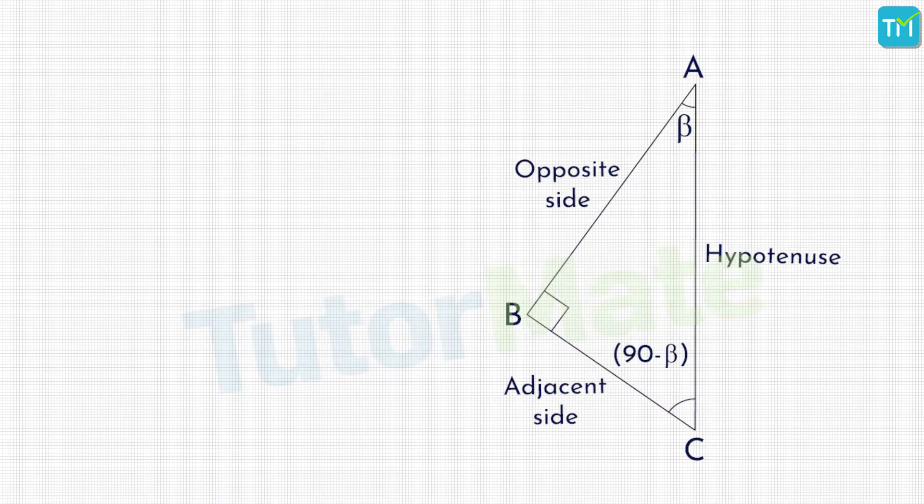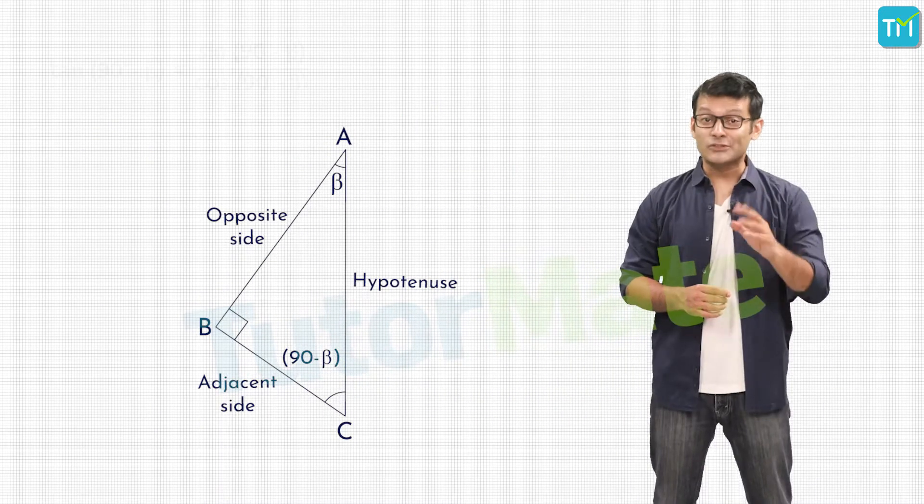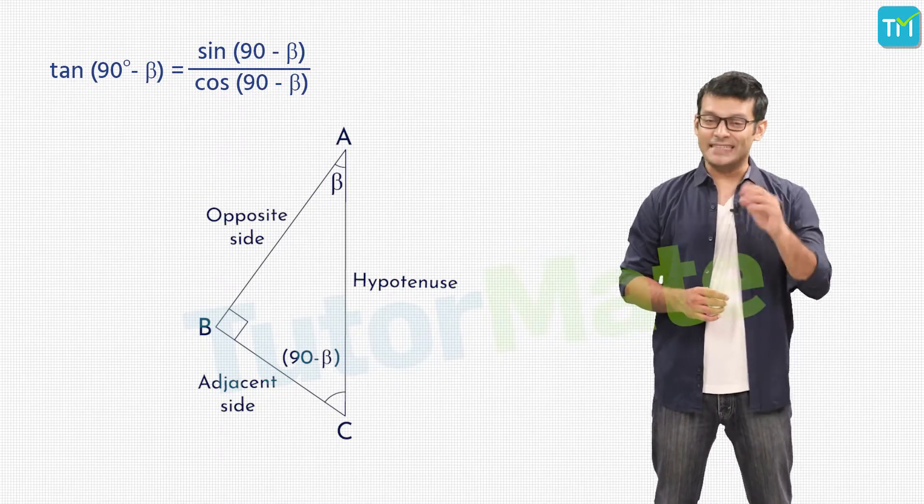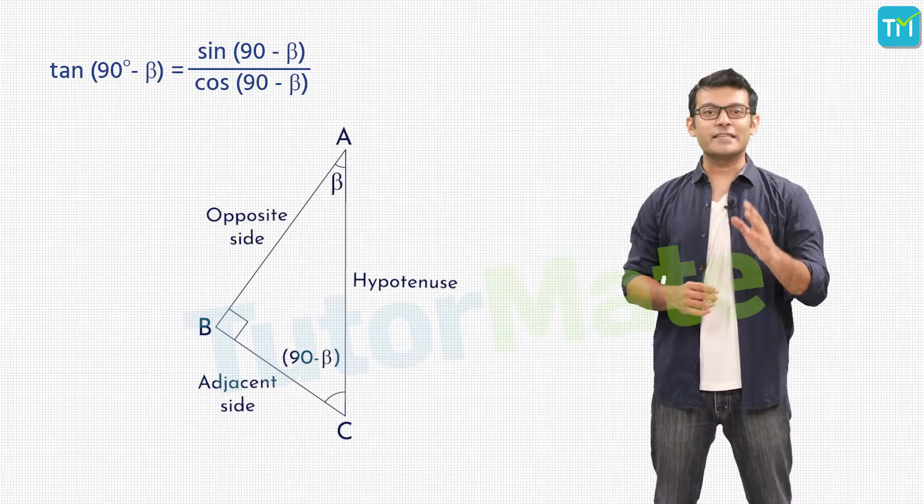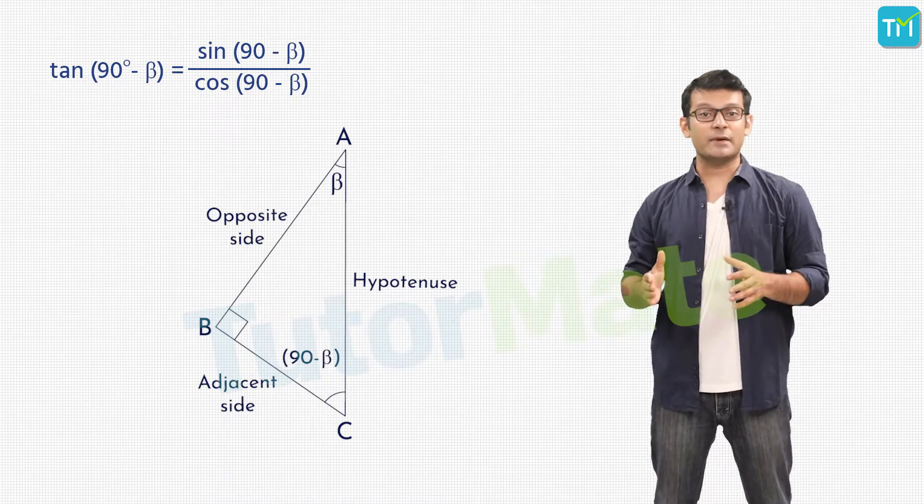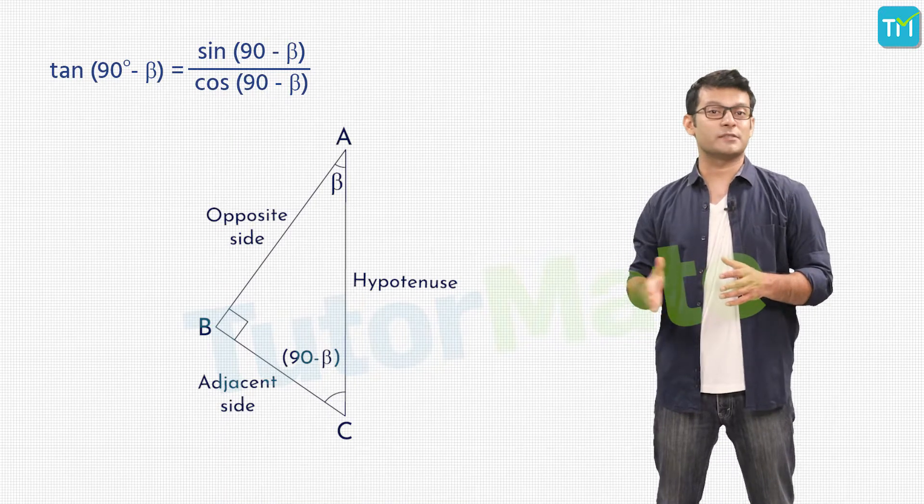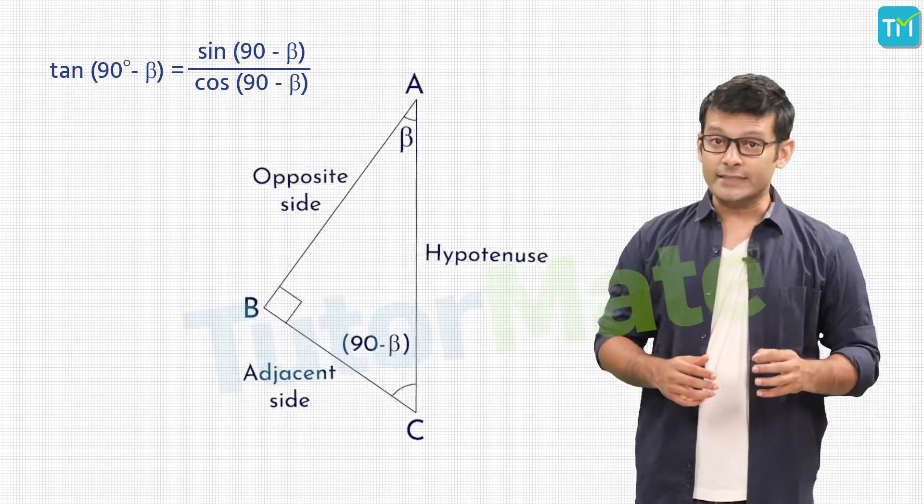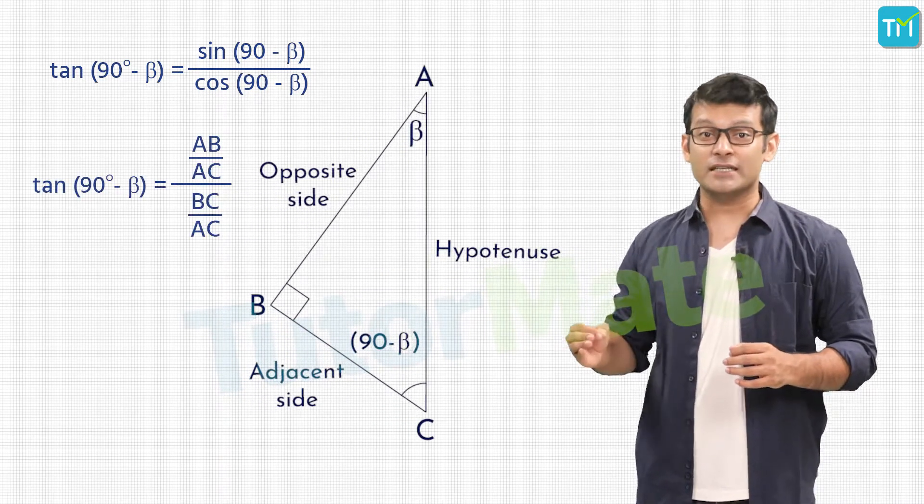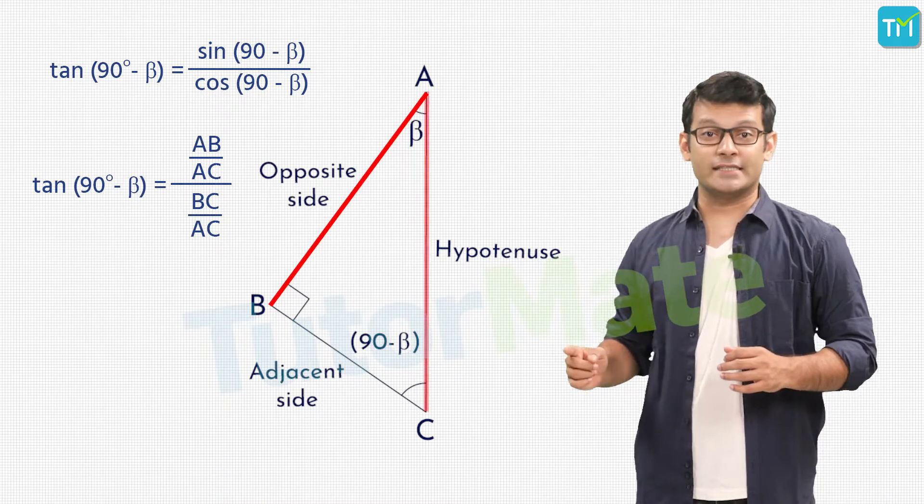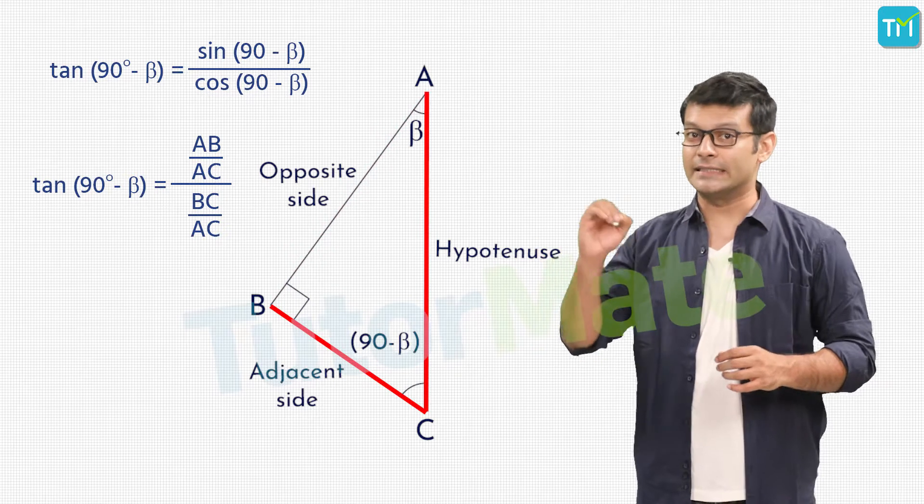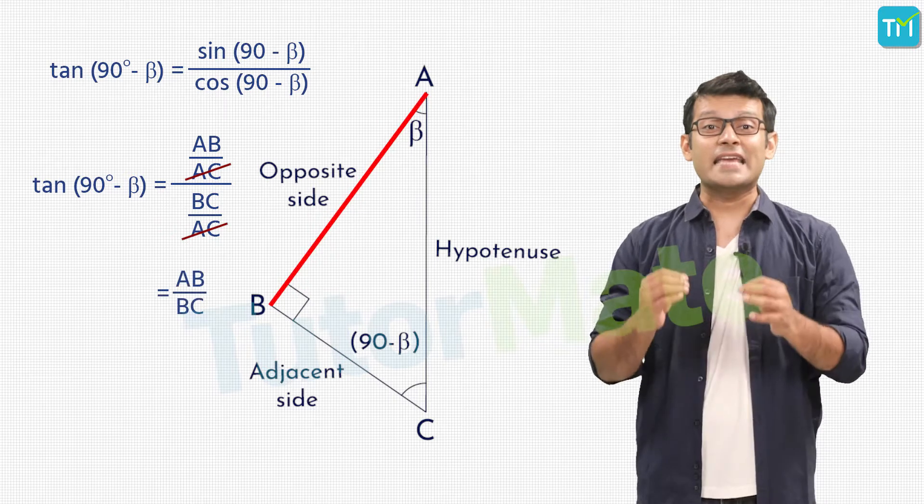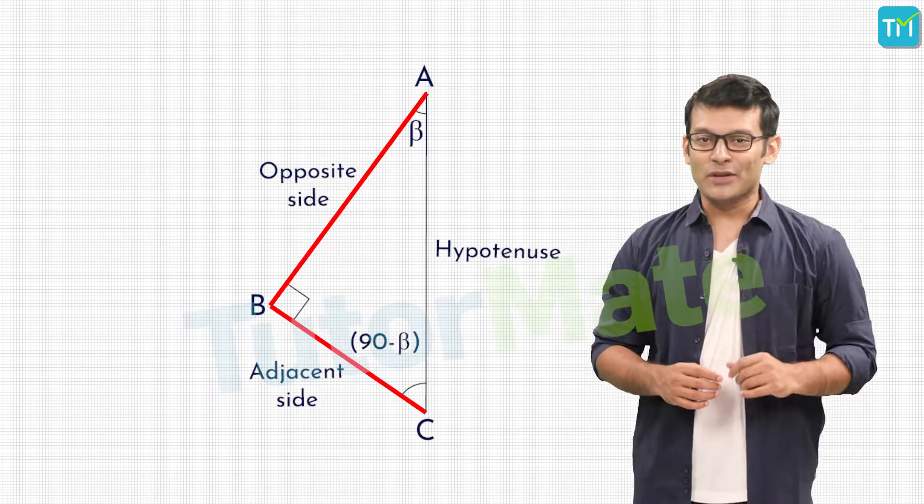Now do you remember how we derived that tan of an angle is equal to the ratio of its sin and cos? So can we find tan(90° - β) using that? Let's see. We'll have tan(90° - β) is equal to sin(90° - β) upon cos(90° - β). Substituting the expressions of sin and cos of (90° - β), we'll get tan(90° - β) is equal to AB upon AC divided by BC upon AC. Cancelling out AC, we will get tan(90° - β) as AB upon BC.